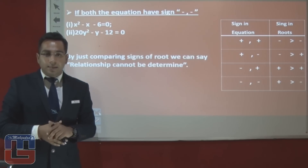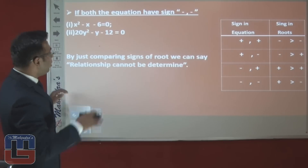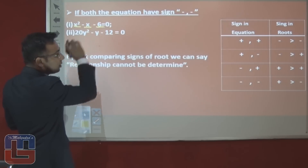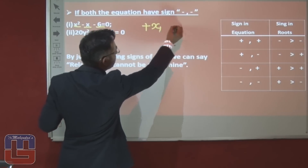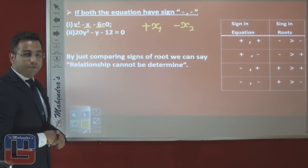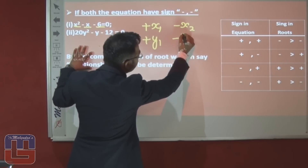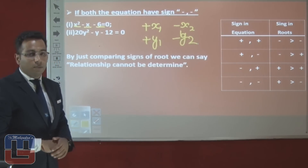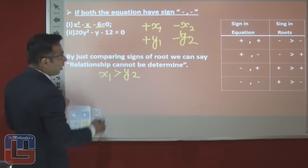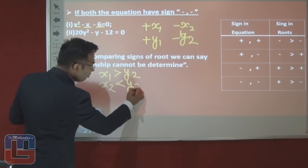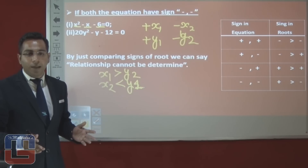Case 3: Both equations have sign minus-minus, for example x² − x − 6. When the equation is minus-minus, the greater root is positive and the smaller root is negative. Both equations give one positive and one negative root each. Again when comparing, x1 > y2 and x2 < y1, giving both greater than and less than. The answer is: relationship cannot be determined.